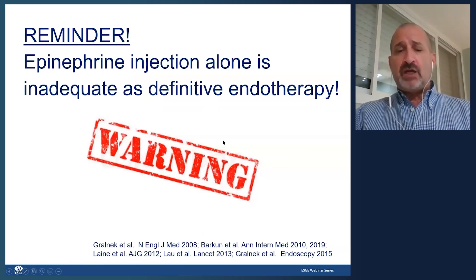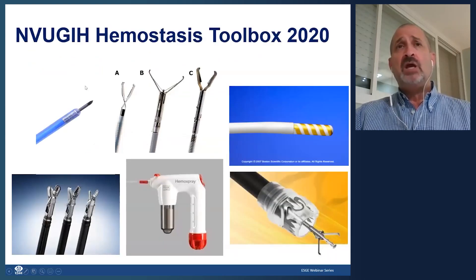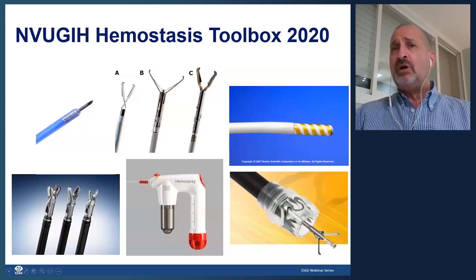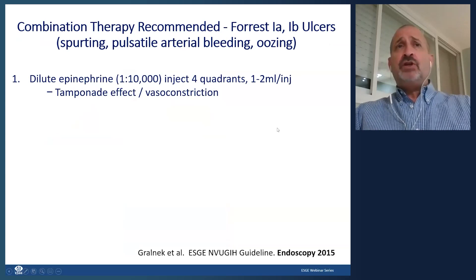Epinephrine alone is inadequate — it's not definitive therapy. If you use dilute epinephrine, you must combine it with another hemostasis agent. The full toolbox should include: injectables, through-the-scope clips, contact thermal probes, hemostatic graspers, topical sprays or powders, and cap-mounted clips. All endoscopists should be facile with these and have them available in their endoscopy units.